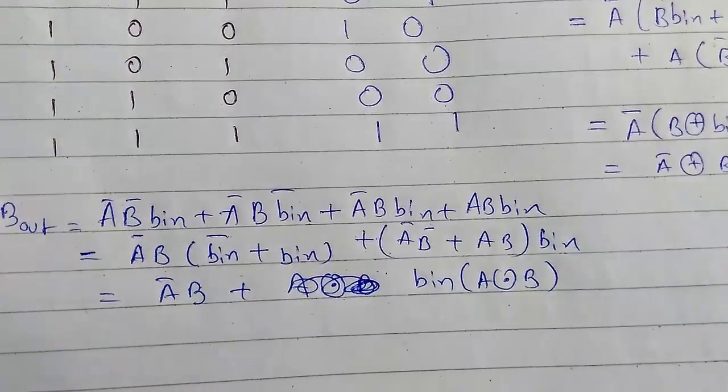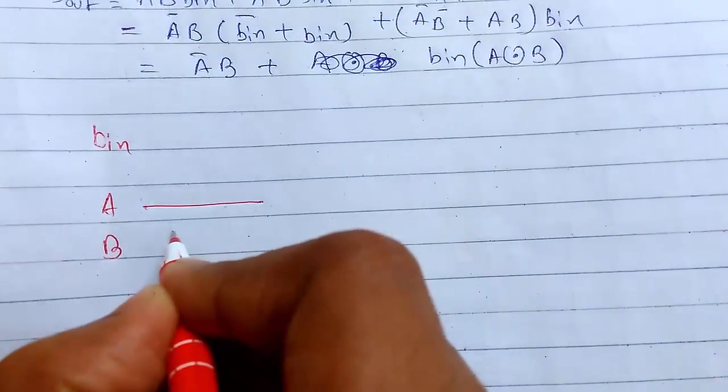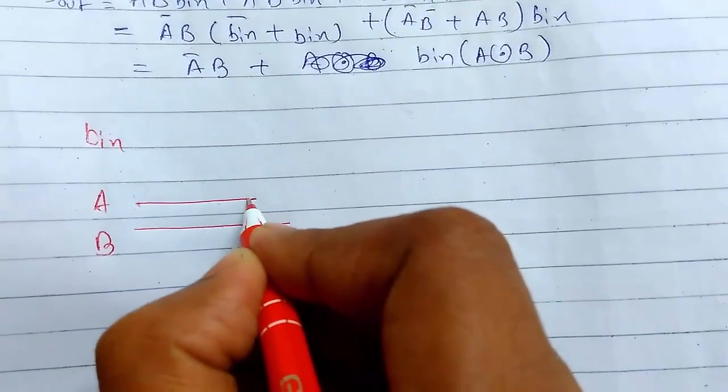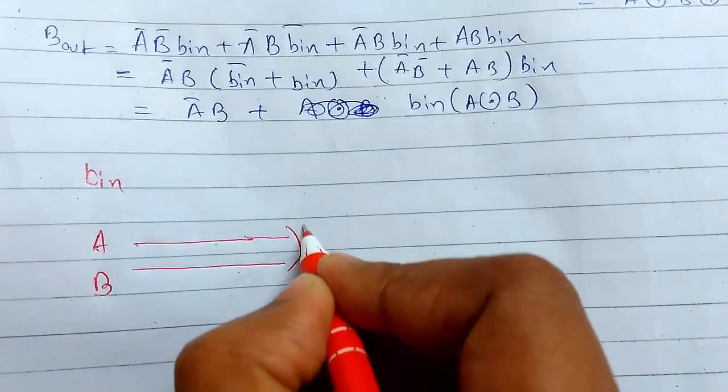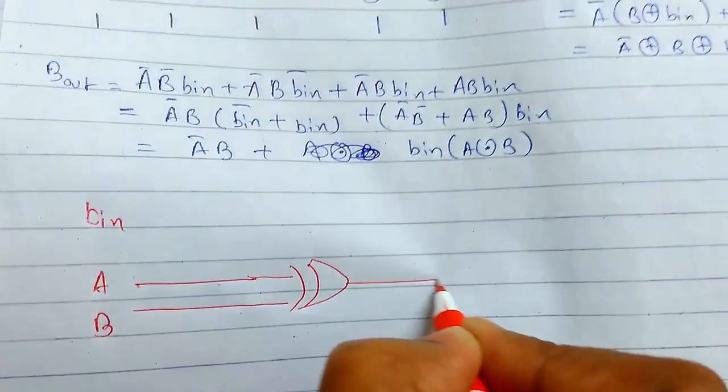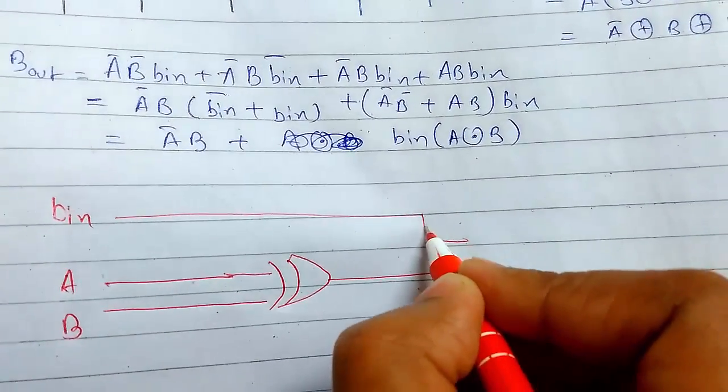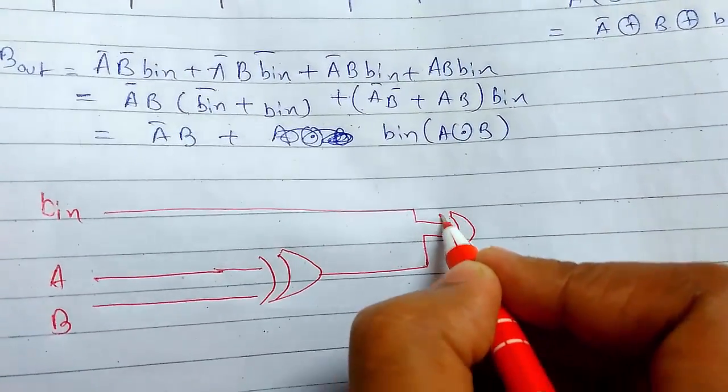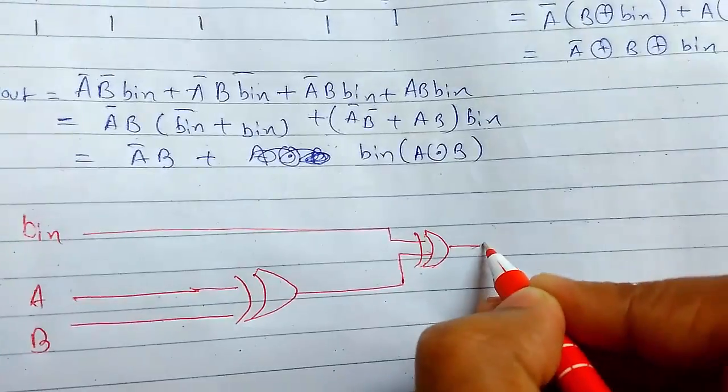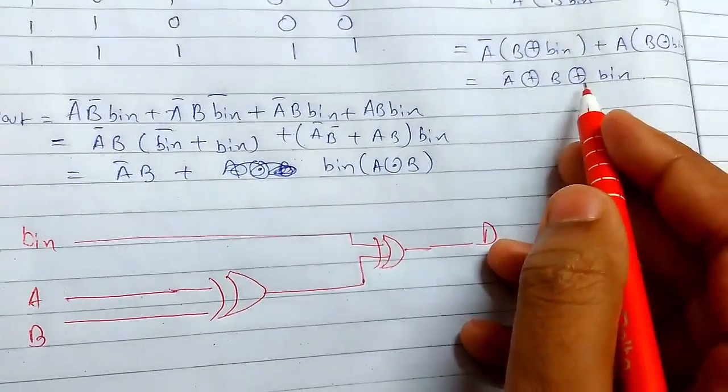So now I will draw the circuit for it. Let me show you. First, I will pass this through XOR and this through XOR again. So we will get the difference part here. We got our difference.